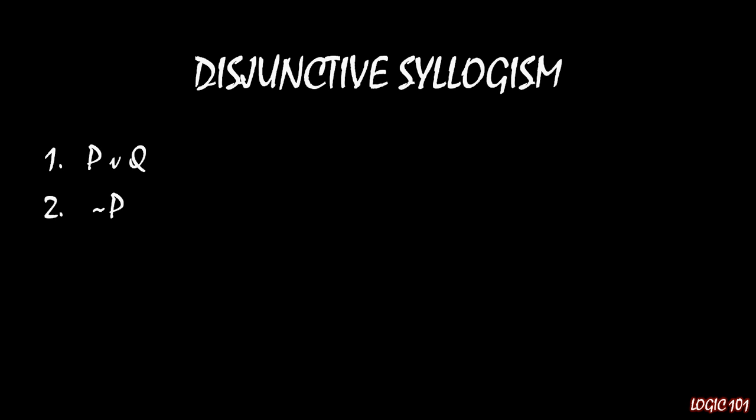For this to work, we need two premises. First, we need a disjunction, P or Q — hence the name disjunctive syllogism. P and Q can either be simple sentences or compound expressions. The second premise we need is the negation of one of the two elements in the disjunction — so here that's not P. If we have those two things, we can conclude that the other half of the disjunction is true: Q. So to recap, disjunctive syllogism tells us if we have P or Q and not P, then therefore Q.